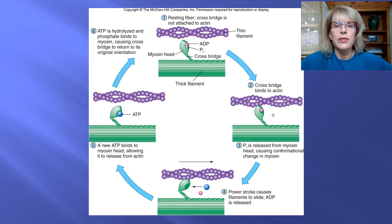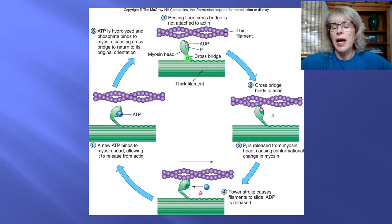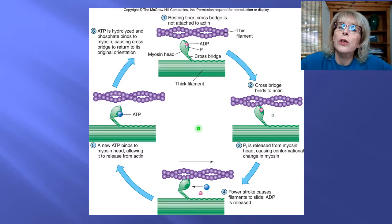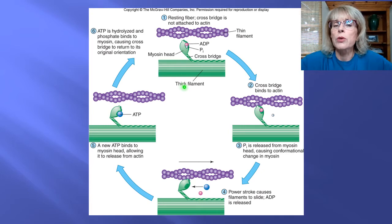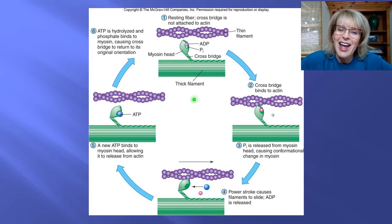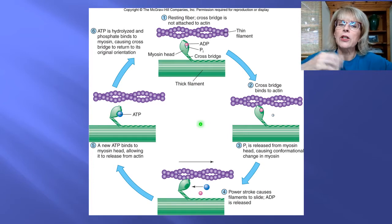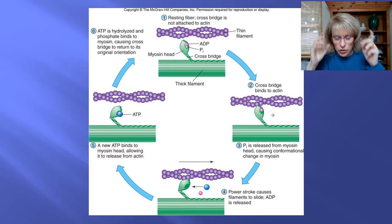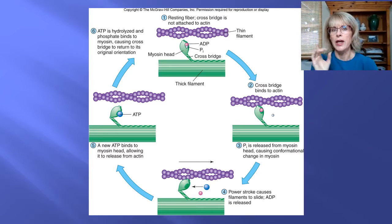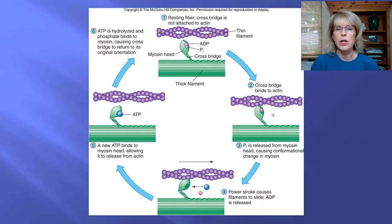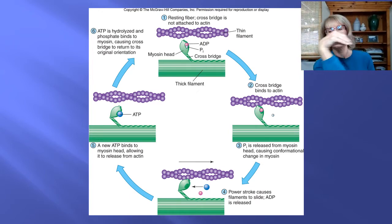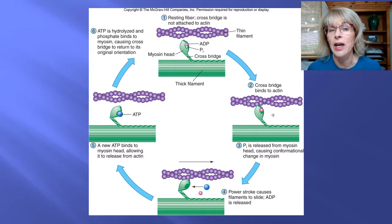We can start at step number one. At this moment, the myosin is not attached to the actin — this could represent the muscle being relaxed, or the protein in between individual contractions. ATP has already bound to the myosin, and the myosin has been cocked and set for its contraction. Myosin uses up the energy molecule ATP at a moment that is a little counterintuitive. You might think myosin would use ATP while actually doing its pulling motion, but that's not when it happens.